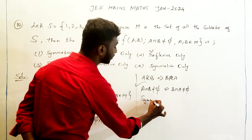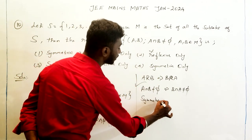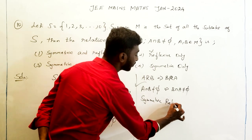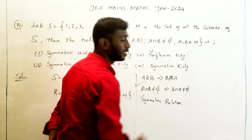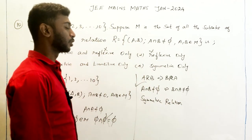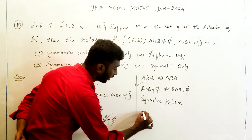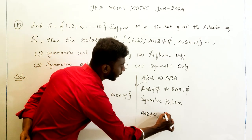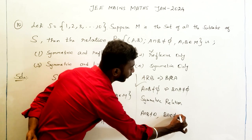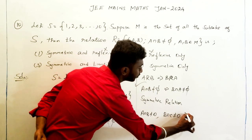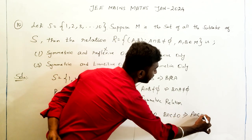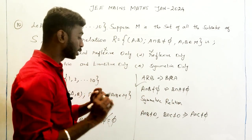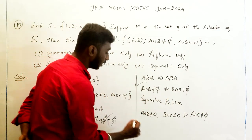So symmetry is satisfied. Now we need to check transitivity: if A ∩ B ≠ ∅ and B ∩ C ≠ ∅, does that imply A ∩ C ≠ ∅?